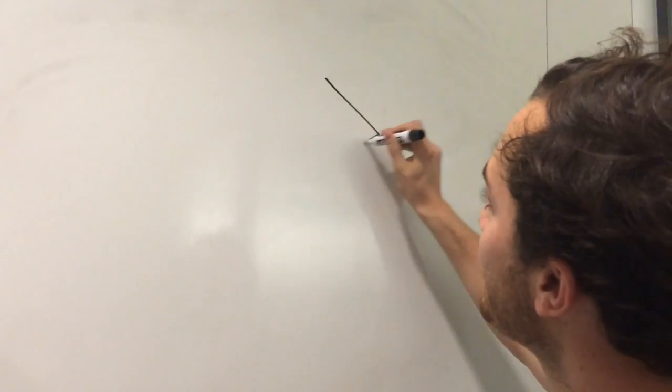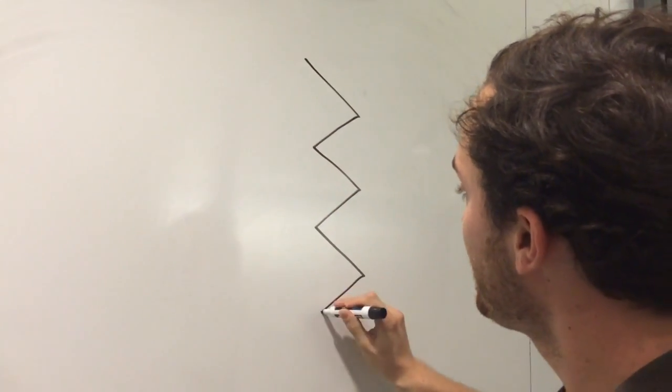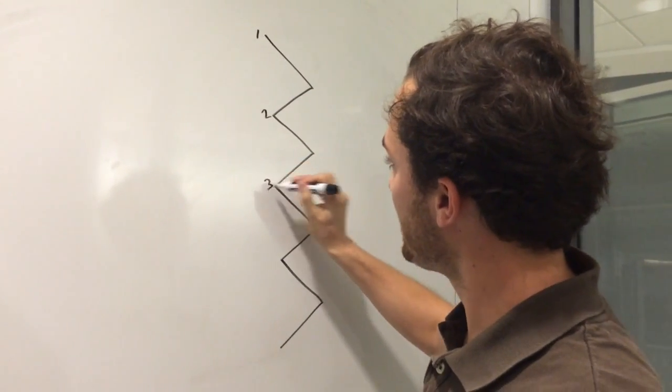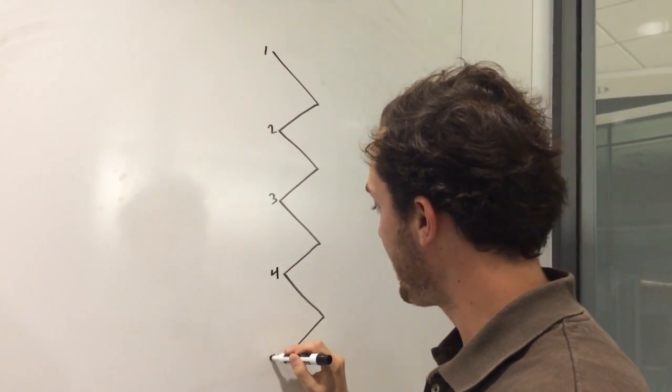First you draw out the five spinal nerves here. One, two, three, four, and five.